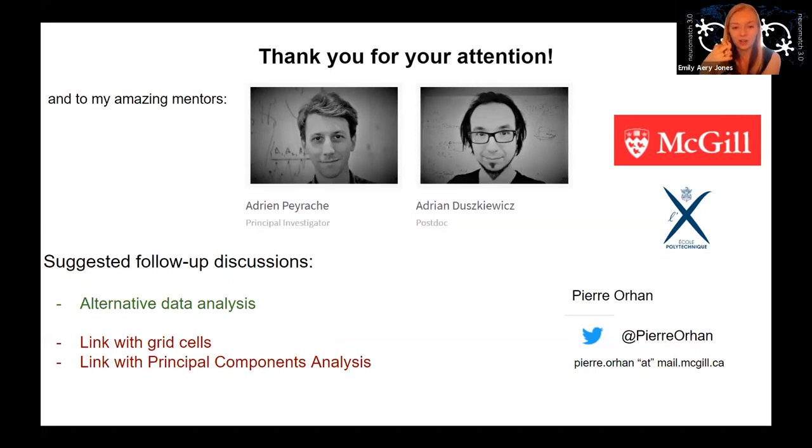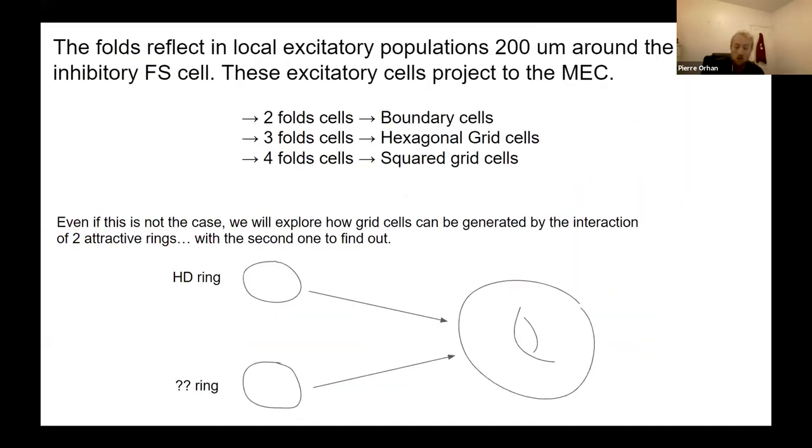All right. Well, while we're waiting for more audience questions, I wanted to take the bait on your link to grid cells. All right. Okay, to the link to grid cells. So, you've seen one folded, two folded, and three folded here. So, well, intuitively, we could say that the two folded cells could play a role in producing the boundary cells, whereas the three folded could be playing a role in producing the grid cells. So, this is an intuitive point of view.